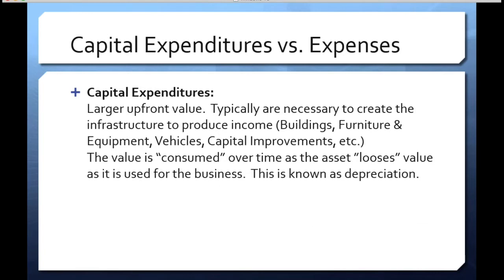How do you define a capital expenditure? In layman's terms: a larger upfront value than your regular expenditures, and it's necessary to create infrastructure that produces income. Typical examples include buildings, furniture, vehicles, and capital improvements. The value of this purchase is consumed over time as the asset loses value — this is technically called depreciation. Note that land doesn't depreciate, and most real estate doesn't lose value over time; the rule is not that it always loses value, but that the cost is consumed over time and therefore deducted over time.